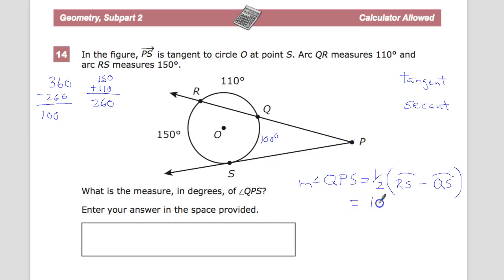So, following through on what I already have, 150 minus 100, one half of 50 equals 25. So there you go, there's the measure of the angle.